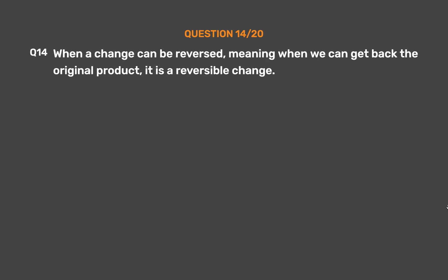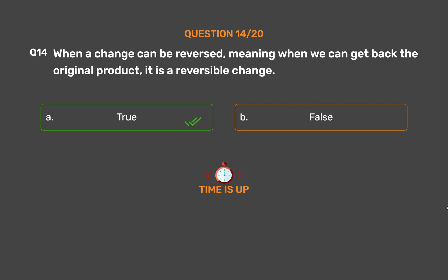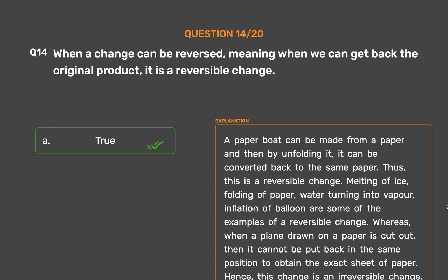Question number 14: When a change can be reversed — meaning when we can get back the original product — it is a reversible change. Option A: True. Option B: False. The correct answer is Option A, True. A paper board can be made from a paper and then by unfolding it, it can be converted back to the same paper — thus this is a reversible change. Melting of ice, folding of paper, water turning into vapor, and inflation of a balloon are some examples of reversible change. Whereas cutting out a plane drawn on paper cannot be put back to obtain the exact sheet. Hence that is an irreversible change. Cooking, growth in a living being, and burning of paper are examples of irreversible changes.